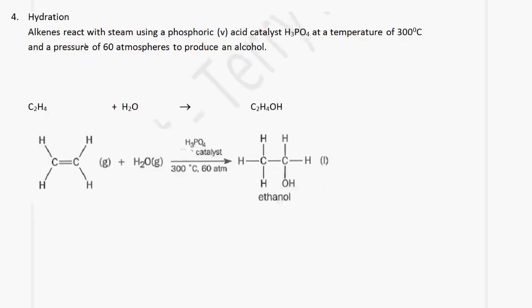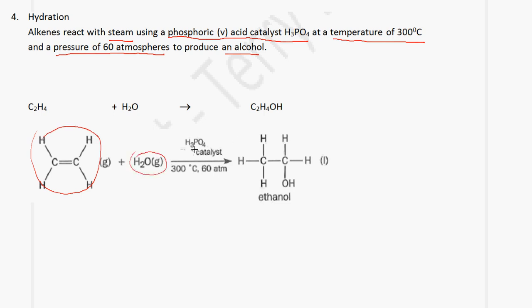The next type of reaction is hydration. Alkenes react with steam using a phosphoric acid catalyst (H3PO4), a temperature of 300 degrees Celsius, and a pressure of 60 atmospheres to produce an alcohol. So starting with ethene plus steam, it gives us ethanol. The ethene molecule reacts with H2O gas (steam) with the phosphoric acid catalyst, 300 degrees Celsius, and 60 atmospheres pressure. The product is ethanol, and this reaction is called hydration.